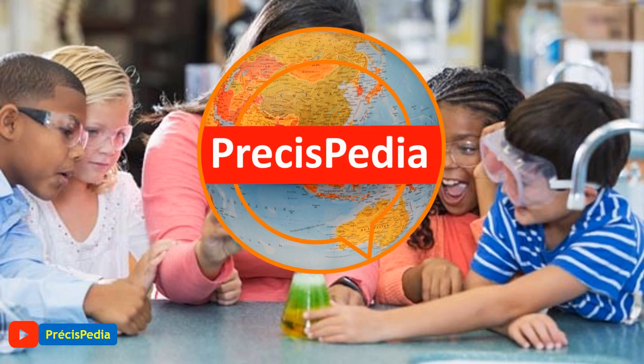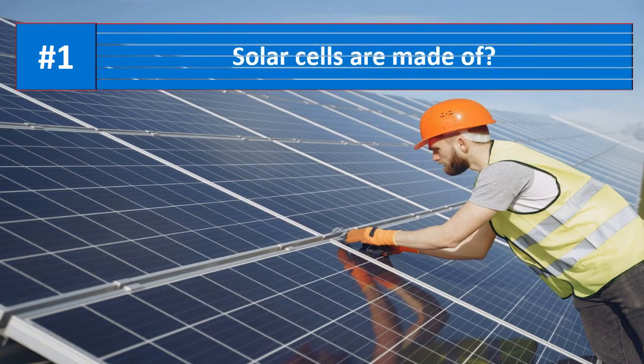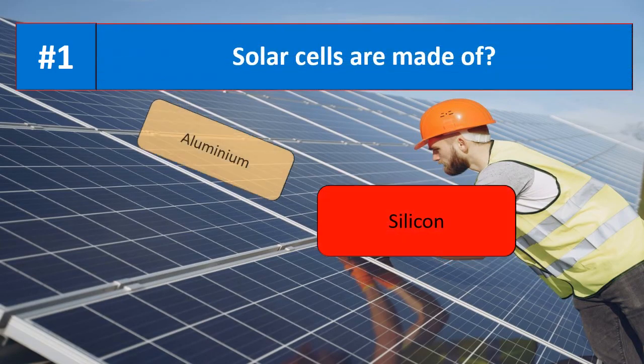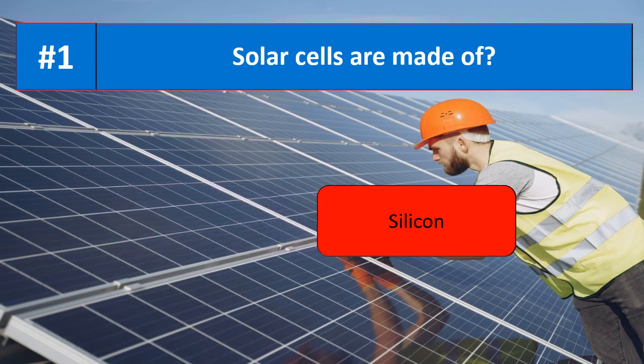Hello and welcome back to another STEM quiz from Presipedia, this one is number 12. Question number one: solar cells are made of which of the following elements? Your options are aluminum, copper, aluminium, or silicon. The right answer is silicon — solar cells are made of silicon.